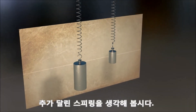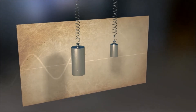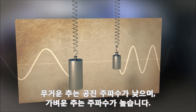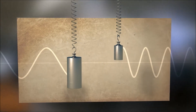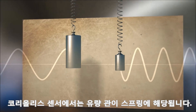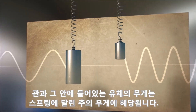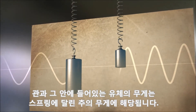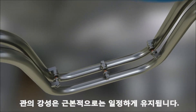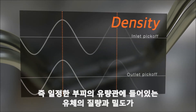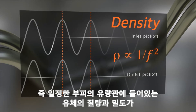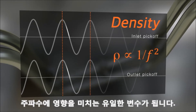Consider an example of a spring and weight system. A larger mass has a lower frequency of oscillation, while a smaller mass has a higher frequency. In the Coriolis sensor, the tubes correspond to the spring, and the mass of the tubes and the fluid they contain correspond to the weight at the end of the spring. The stiffness of the flow tubes remains essentially constant. Therefore, the mass and density of the fluid contained in the fixed volume of the flow tubes is the only variable affecting the frequency.